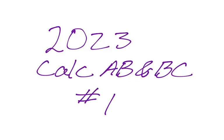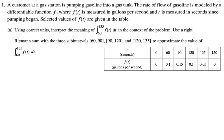Okay, in this video we're going to be doing number one from the 2023 Calc AB and BC exams. It is a table slash working with a rate of change problem. Let's take a look. Number one, a customer at a gas station is pumping gasoline into a gas tank. The rate of flow of gasoline is modeled by the differentiable function f, where f(t) is measured in gallons per second and t is measured in seconds since pumping began.